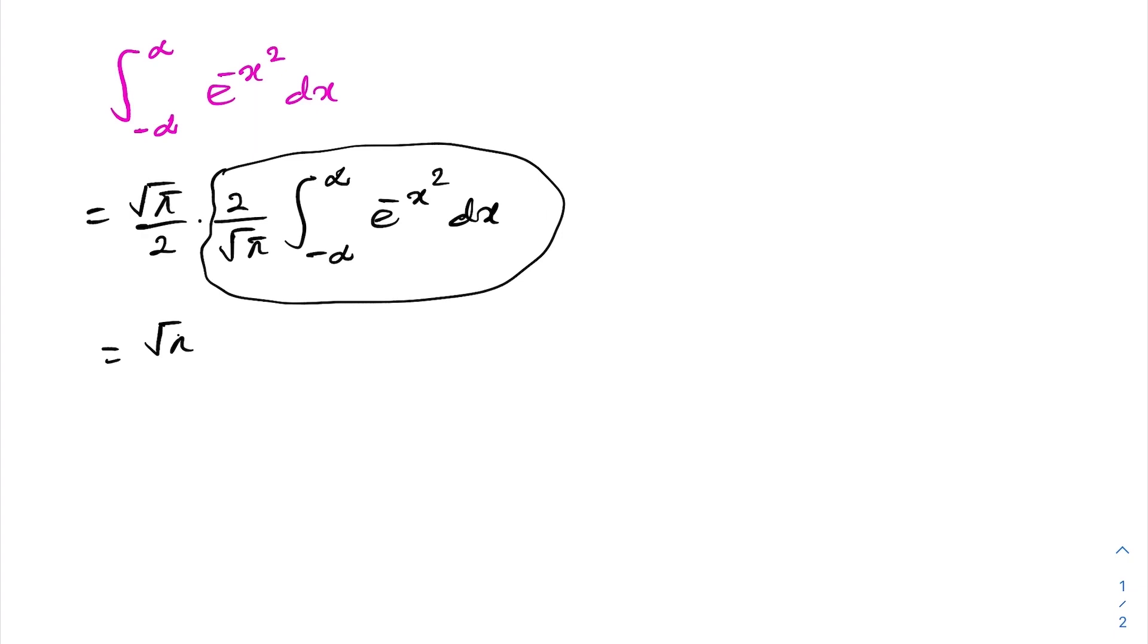So, we have square root of pi over 2 times erf of x from minus infinity to infinity. Now, we need the value of erf of x at minus infinity and infinity.